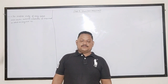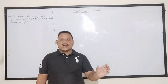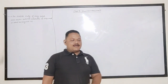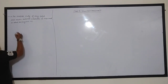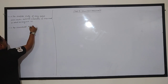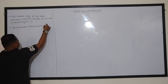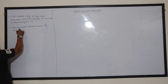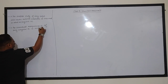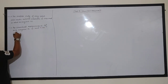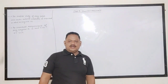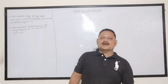हम सबको पता है कि meter, centimeter, kilometer से भी बड़े units होते हैं। किसी भी physical quantity का जो standard measurement होता है, उसे उस quantity की unit कहते हैं। The standard measurement of any physical quantity is said to be its unit.